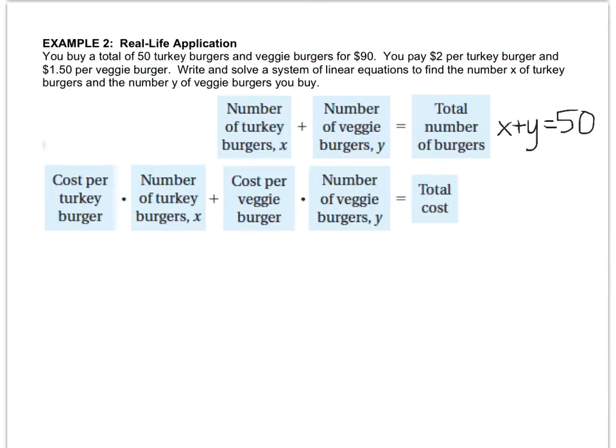Now, the second equation tells me that the cost per turkey burger times the quantity of them plus the cost per veggie burger times the number of them equals how much money I paid, which should make sense as you think about it in real life. So let's figure out what the values are. The cost per turkey burger is $2 times x, so I'll just write that as 2x, plus the cost per veggie burger, which is $1.50. I'll just write that as 1.5 since it's just an equation, times y, equals the total amount of money that was spent, which is $90.